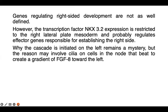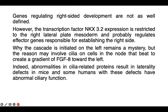Why the cascade is initiated on the left remains a mystery, but the reason may involve the cilia on the cells in the node. The cilia in the node create a gradient of FGF8 towards the left. Indeed, abnormalities in cilia-related proteins result in laterality defects in mice and some humans — abnormal ciliary function determines whether the left side or right side develops first, making cilia-related protein abnormalities the main key factor in left-right determination.